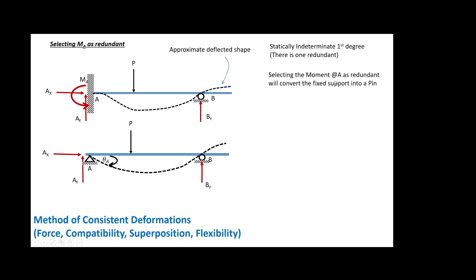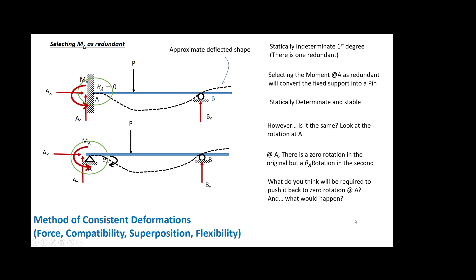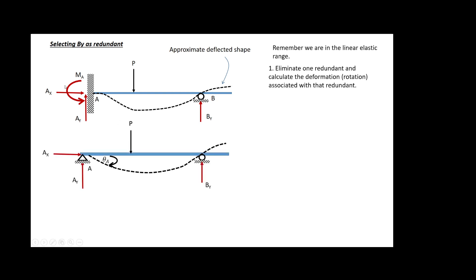Now let's say we decide to eliminate the moment as the redundant — no problem. We eliminate the moment and this structure becomes a pin support, which is still stable. However, they are not the same: with a fixed support the rotation is zero, but with a pin we have a rotation. We have to apply that moment back to make the structure match the original. The procedure is the same: eliminate the redundant moment and calculate the reactions and everything for this reduced structure.